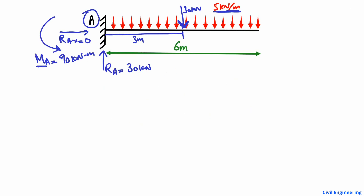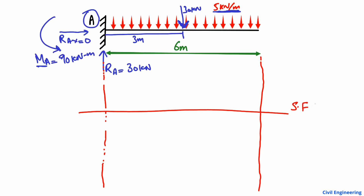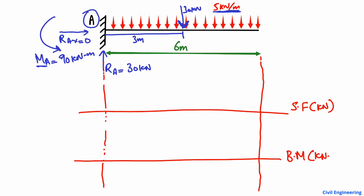To draw the shear force and bending moment diagrams, we draw two reference lines: one for the shear force diagram in kilonewtons, and one for the bending moment diagram in kilonewton-meters. For the shear force diagram, we start at the reference line zero. The reaction RA is acting in the upward direction at 30 kN, so the shear force goes from zero up to 30 kN.